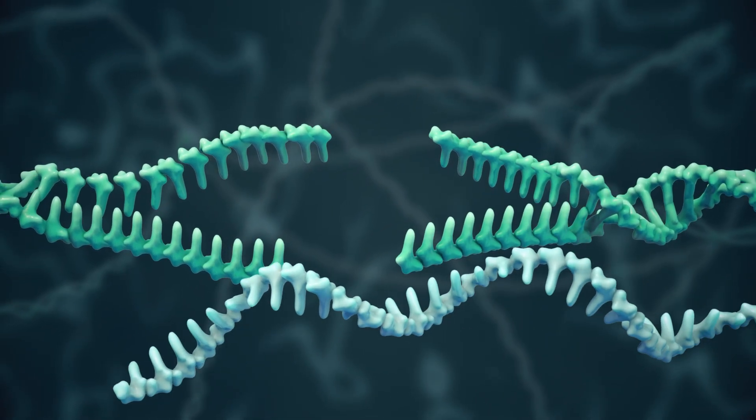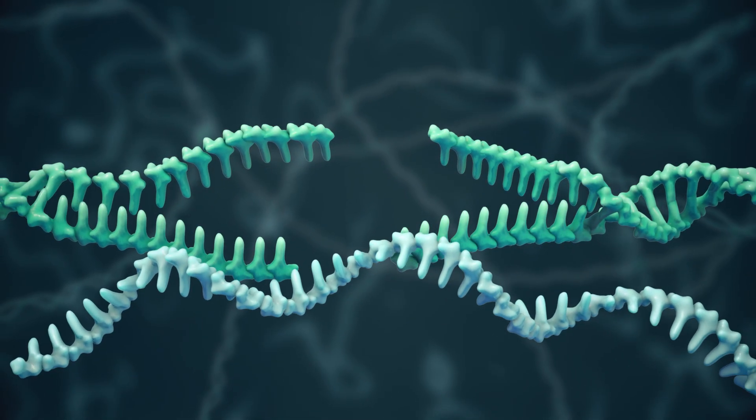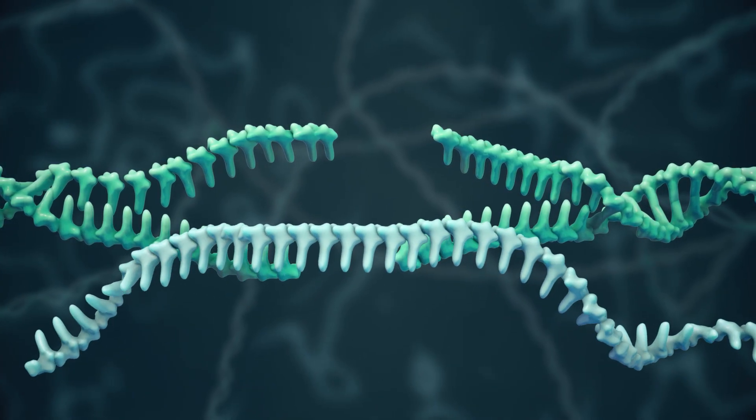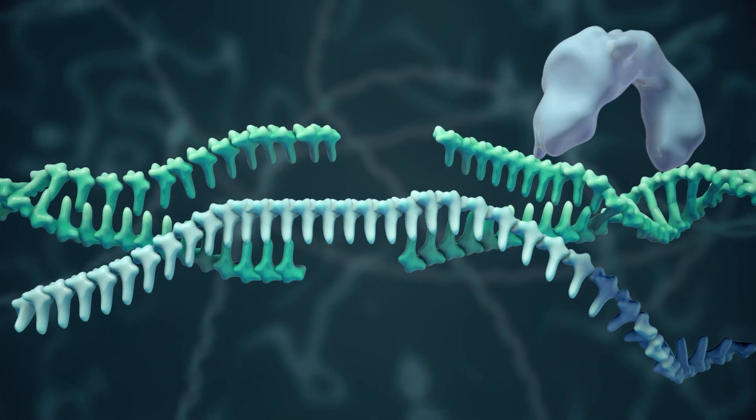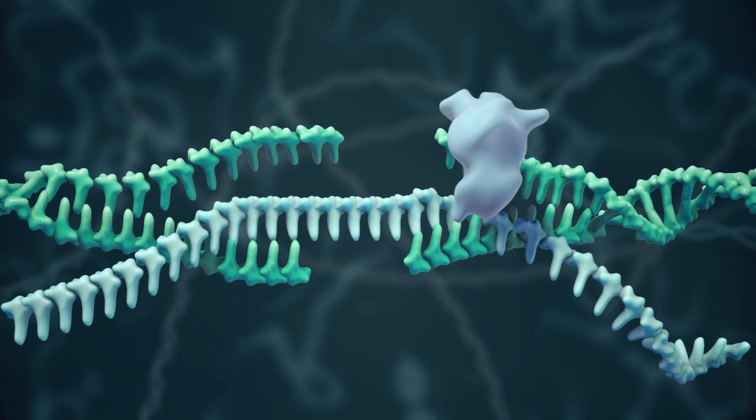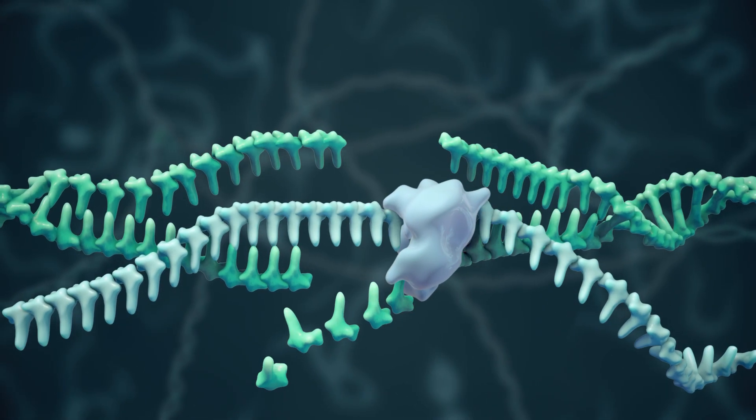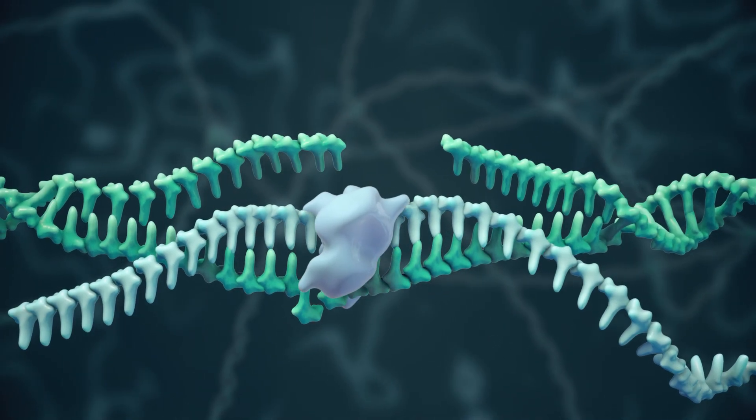For this editing process to work, a short piece of DNA template that contains the desired normal gene sequence is introduced into the cell. The cell uses this fragment as a template and copies the new sequence as it repairs the broken DNA.